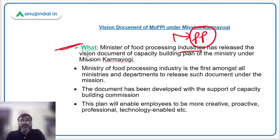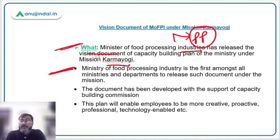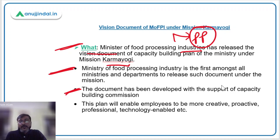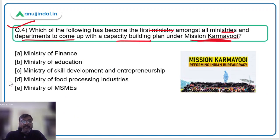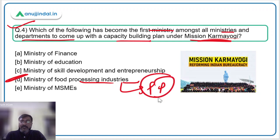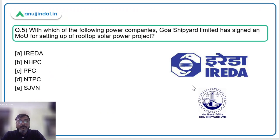Minister of Food Processing Industries Pashupati Kumar Paras has released the vision document of the capacity building plan of the ministry under Mission Karmayogi. After this, the Ministry of Food Processing Industries has become the very first ministry among all ministries and departments to come up with this plan. This document was developed with the support of the Capacity Building Commission and will enable employees to be more creative, proactive, professional, and technology-enabled. The correct answer is option D — Ministry of Food Processing Industries.